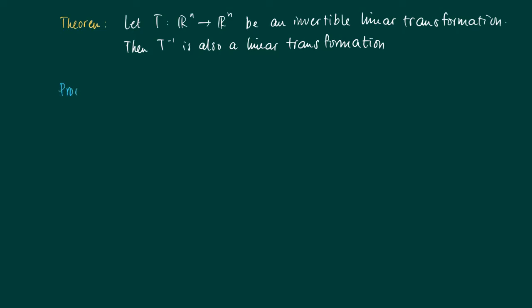We may show that when T is an invertible linear transformation, then T inverse is also a linear transformation. Well to see this, take arbitrary vectors V and W in R^n and let